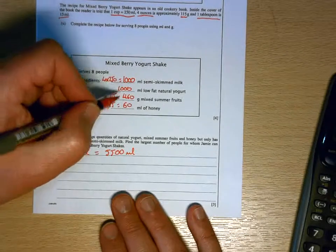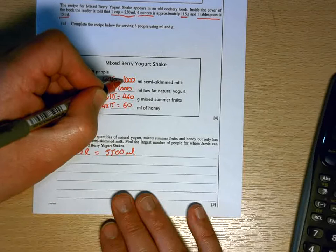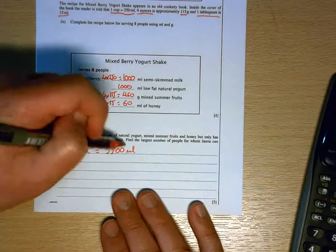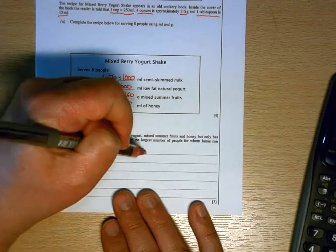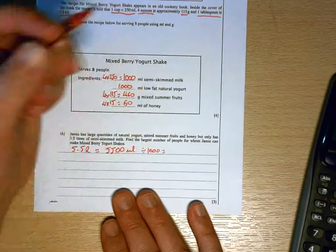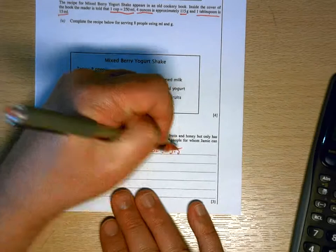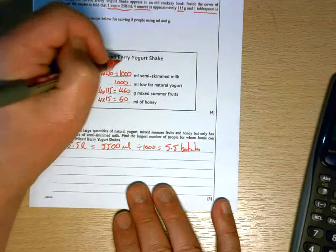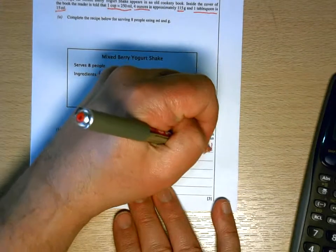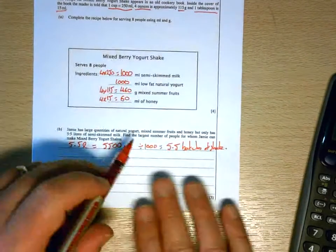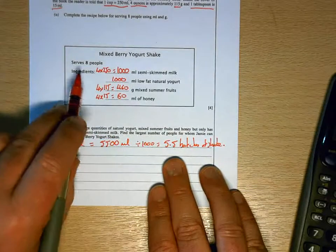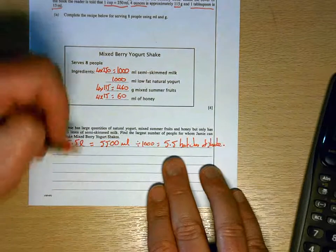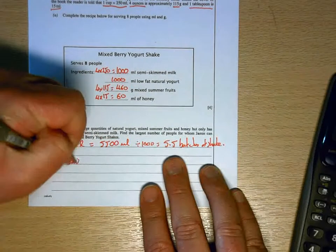He needs a thousand milliliters for eight people. So if we divide that by a thousand, we get 5.5 batches of the shake. Okay, he's got enough milk for five and a half batches, and each batch serves eight people. Okay, so 5.5 times 8, so he can make enough yogurt for 44 people.